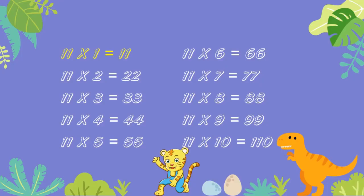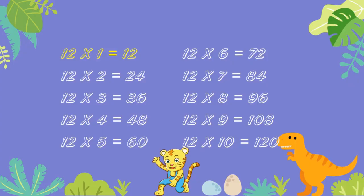11 ones are 11. 11 twos are 22. 11 threes are 33. 11 fours are 44. 11 fives are 55. 11 sixes are 66. 11 sevens are 77. 11 eights are 88. 11 nines are 99. 11 tens are 110.